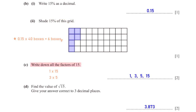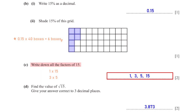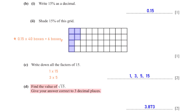Write down all the factors of 15. To get the factors of 15, we list the numbers that multiply to give 15. The factors of 15 are 1, 3, 5, and 15. Find the value of the square root of 15, giving your answer correct to 3 decimal places. When we type square root of 15 into the calculator, we get 3.873 rounded to 3 decimal places.